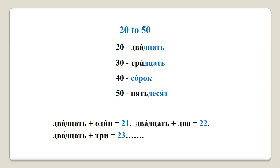Whereas 50 looks like five times ten — пятьдесят. To say 21 or 22, all we have to do is follow the same pattern as we do in English, so 21 becomes двадцать один, 22 becomes двадцать два, and so on.